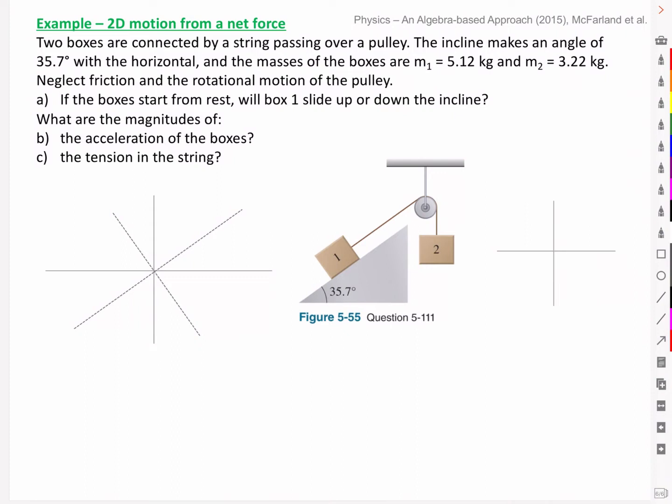The question says, two boxes are connected by a string passing over a pulley. The incline makes an angle of 35.7 degrees with the horizontal, and the masses of the boxes are m1 equal to 5.12 kg and m2 equal to 3.22 kg. Neglect friction and the rotational motion of the pulley.